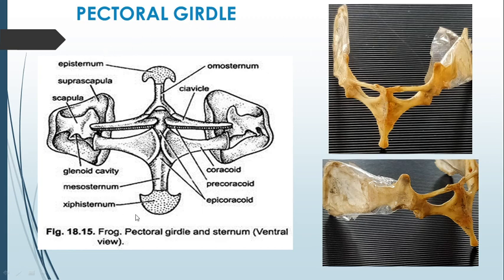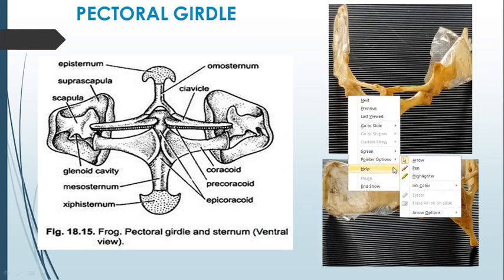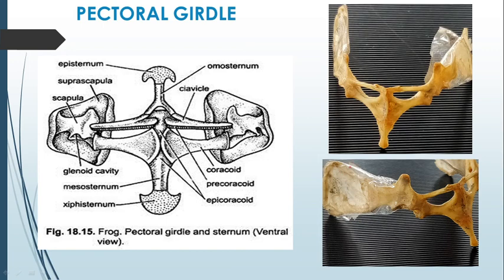Looking at the diagram of the pectoral girdle, you can divide it into a scapular region and a coracoid region. In the scapular region you can see two bones: one is the suprascapula and the second is the scapula. In the picture, this region up to here is the suprascapula, and the remaining portion is the scapula.